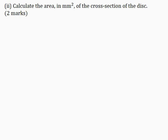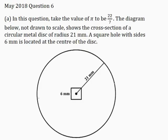Part 2: Calculate the area in mm² of the cross-section of the disk, for 2 marks. In the diagram, this is the cross-section of the disk. To calculate the area of the cross-section, I have to find the area of the circle and subtract the area of the square hole.